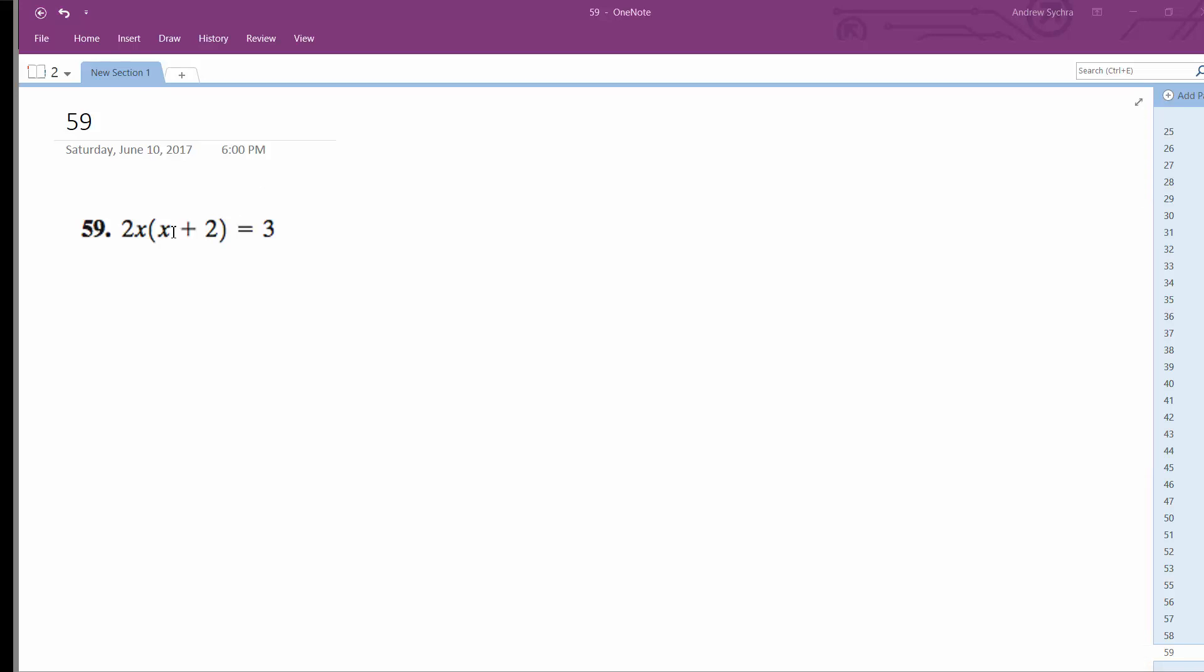We want to complete this problem. We're going to use the quadratic formula, but first I'm going to distribute the 2x, so I get 2x squared plus 4x, and then I'm going to move the 3 over, so minus 3 equals 0.